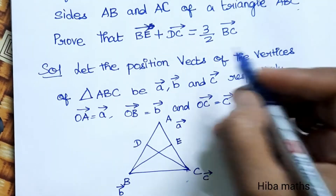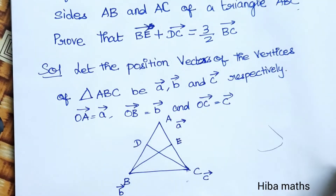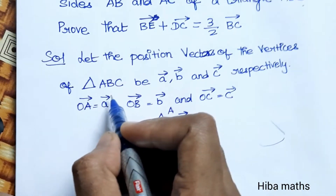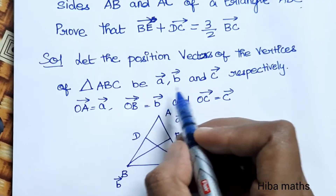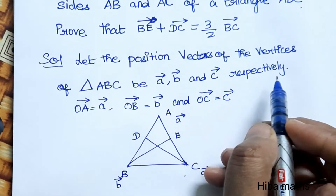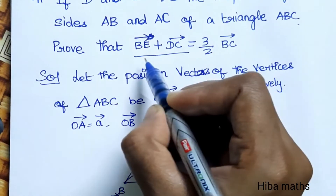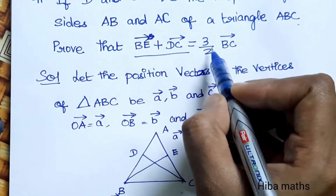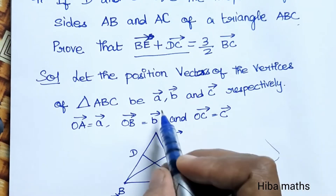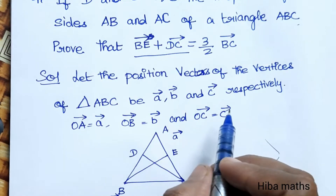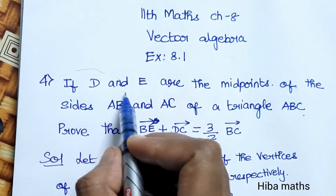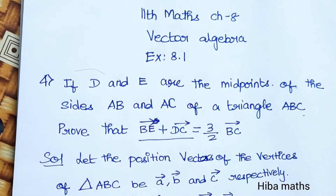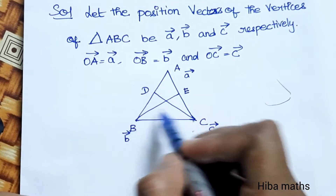Now we have the position vectors of the vertices of triangle ABC: A vector, B vector, C vector. The proof is very important. We need to show BE vector plus DC vector equals 3 by 2 times BC vector. The vertices of triangle ABC are A, B, C, and D and E are the midpoints of the sides AB and AC respectively.